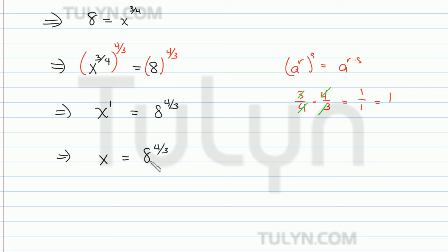And now we should try to simplify this as we can. We can write 8 to the 4 thirds power as 8 to the 1 third power to the 4th power, using the same law up here, because if we multiply it back in, it's just going to give us 4 thirds.